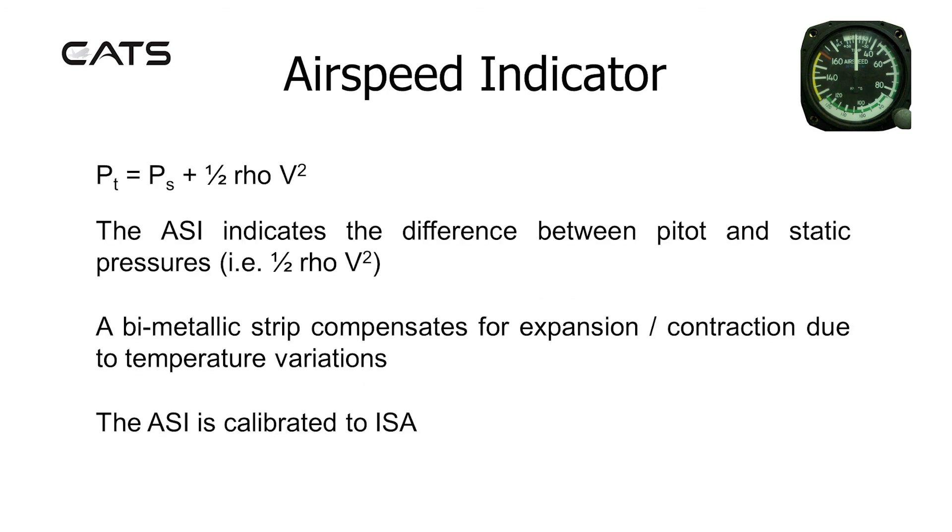Total pressure is equal to static pressure plus dynamic pressure, and dynamic pressure corresponds to half rho v squared. The airspeed indicator indicates the difference between pitot and static pressures, i.e. half rho v squared. A bimetallic strip compensates for expansion and contraction due to temperature variations. The ASI is calibrated to the International Standard Atmosphere.